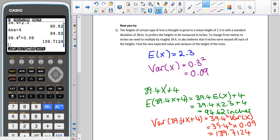So this time, we have the heights of certain types of trees is thought to grow to a mean height of 2.3 meters with a standard deviation of 30 centimeters. We have to be careful this time because we were given the standard deviation instead of the variance. The mean is just another word for the expected value, so our expected value is 2.3 meters. I also want my variance to be in meters as well, so I changed the 30 centimeters into 0.3 meters, and because that was the standard deviation, I am then going to square this, which gives me a variance of 0.09.